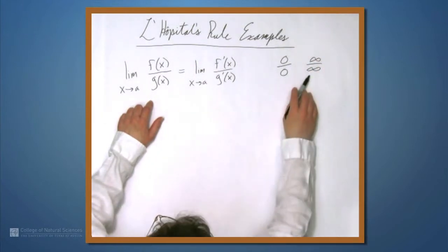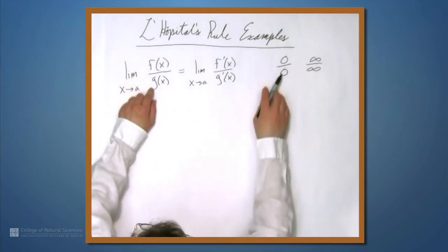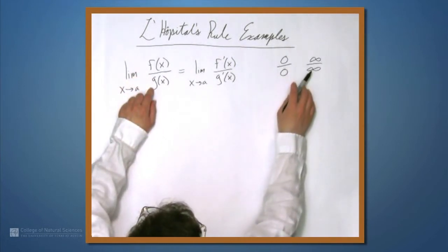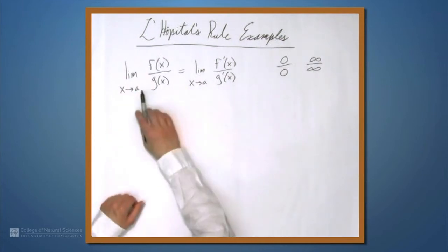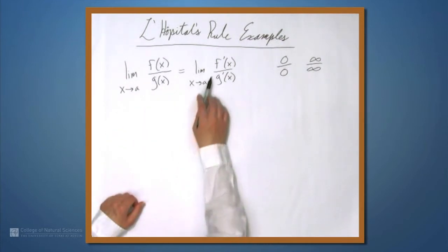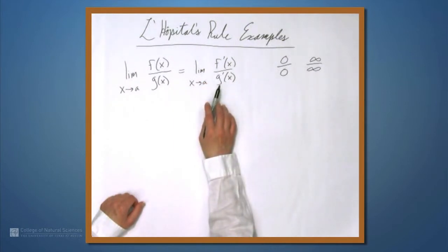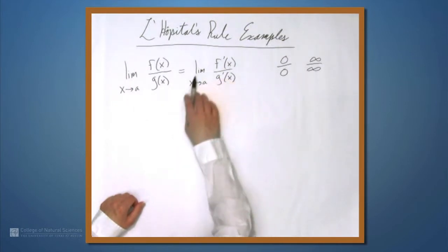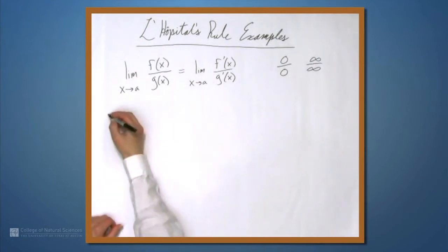Or both f and g are going to infinity. And I guess I can really put a plus or minus in front of these infinities, that part doesn't matter. So if f and g are both going to zero, or both going to plus or minus infinity, then the limit as x approaches a of this ratio is the limit as x approaches a of the ratio of the derivatives, as long as this limit exists. So let's look at an example.